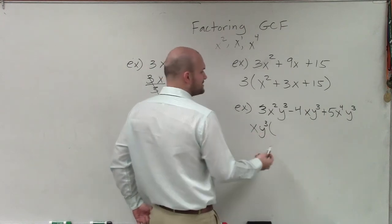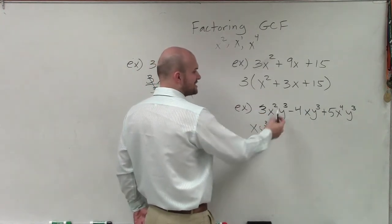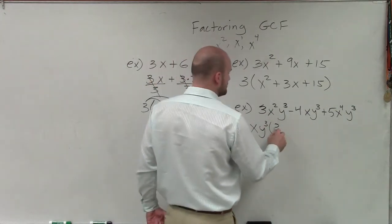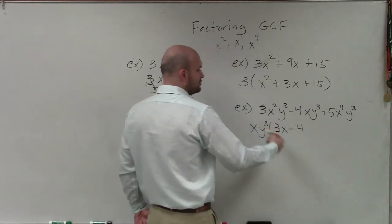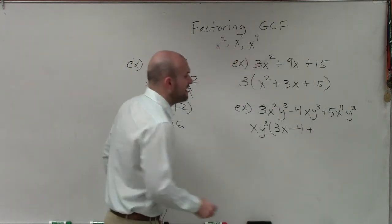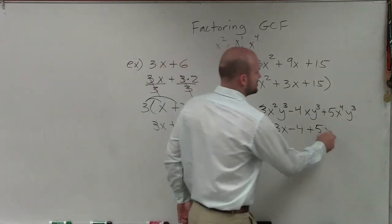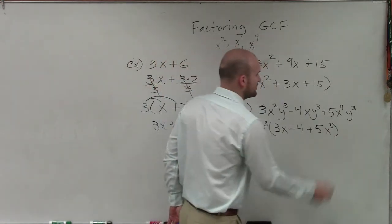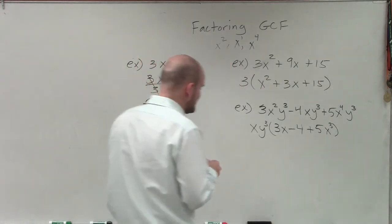So when I factor out the x and the y to the third power, well, x squared divided by x is just going to leave me with an x. y to the third divided by y to the third is just going to leave me with a 1. So I'll be left with 3x minus 4x divided by x is 1. y cubed divided by y cubed is just going to be 1. And then plus 5x to the fourth divided by x is now just going to be x to the third. And y cubed divided by y cubed is just going to leave us with a 1. So again, that's with your factoring out your GCF with variables.